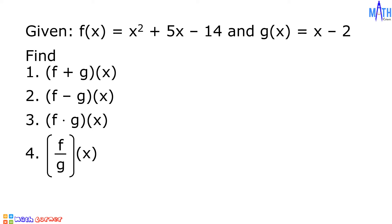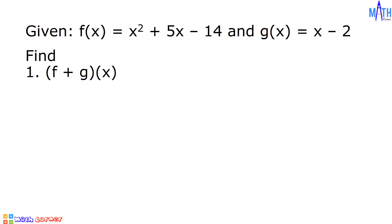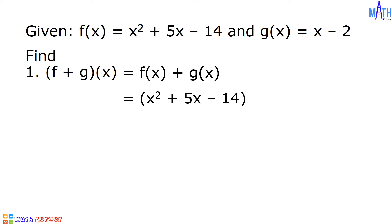Let us begin with number 1. Quantity f plus g of x is equal to f of x plus g of x. f of x is x squared plus 5x minus 14, plus g of x which is x minus 2.